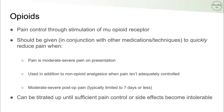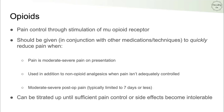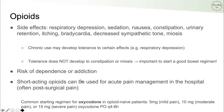Opioid analgesics produce pain control through stimulation of the mu opioid receptor. They are used when pain is moderate to severe, when non-opioids haven't provided adequate control, or for post-operative pain — typically limited to seven days or less. Unlike non-opioids, which have a ceiling for analgesia, opioids can be titrated higher and higher, continuing to provide more pain control until side effects become intolerable.